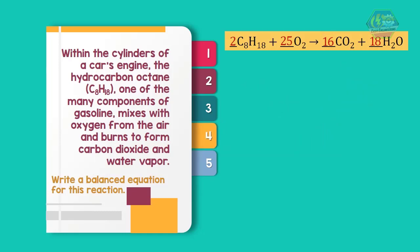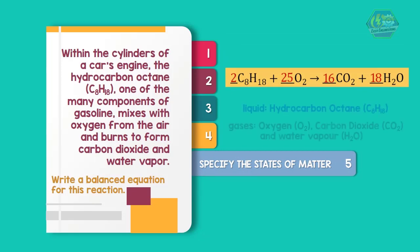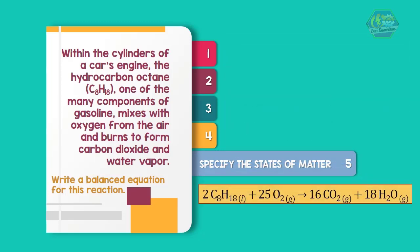Now for the last step: Specify states of matter. So now we have our final balanced equation: 2C8H18 (l) + 25O2 (g) → 16CO2 (g) + 18H2O (g).